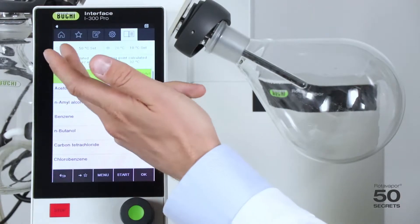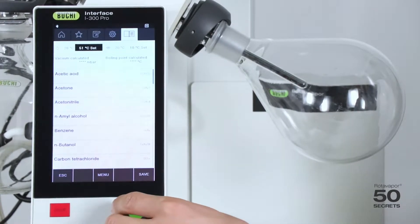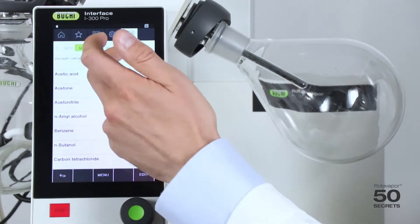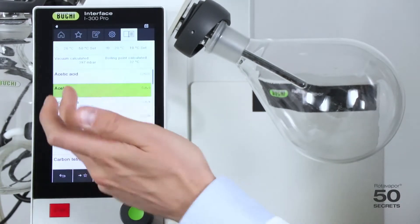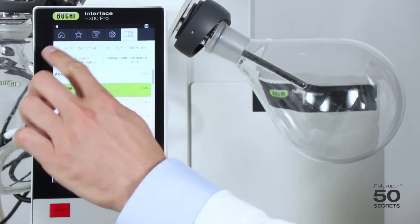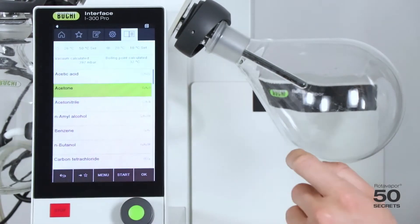And of the chiller. You can of course as well change it to a different temperature. Based on these two values and the selected solvent, a vacuum is calculated and a boiling point is calculated.